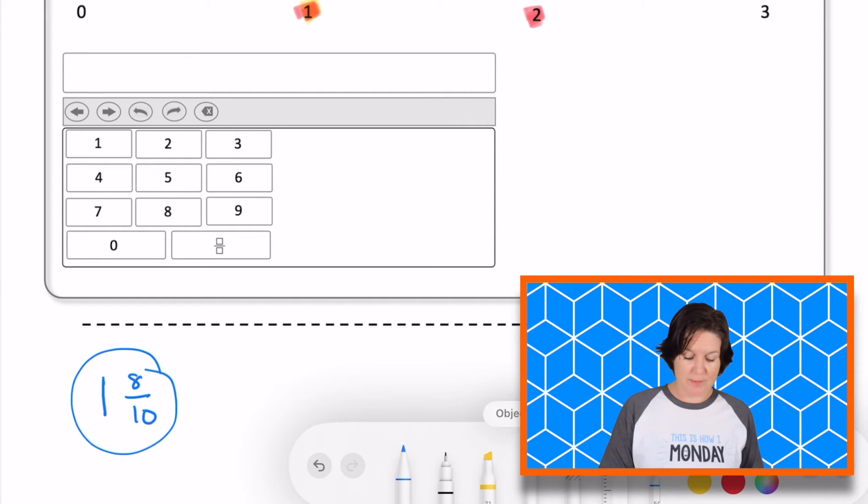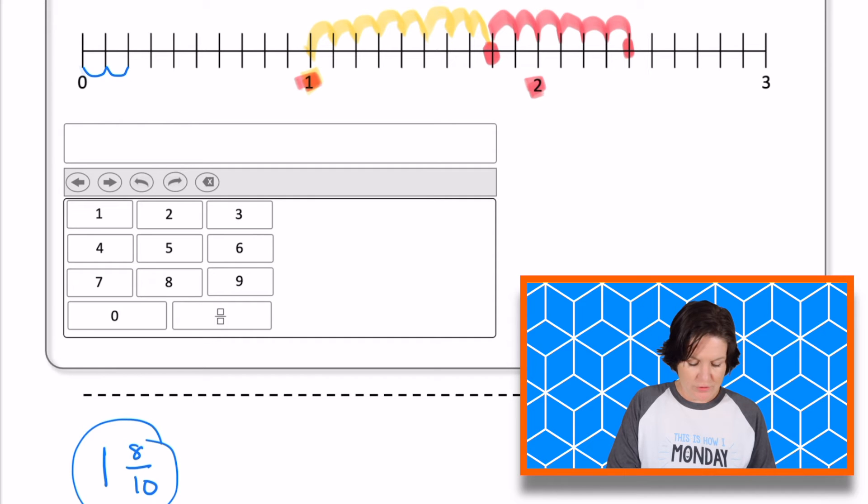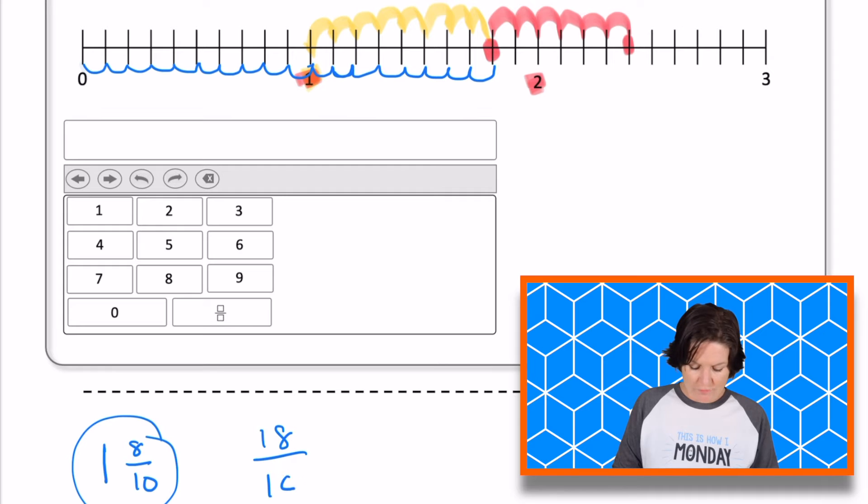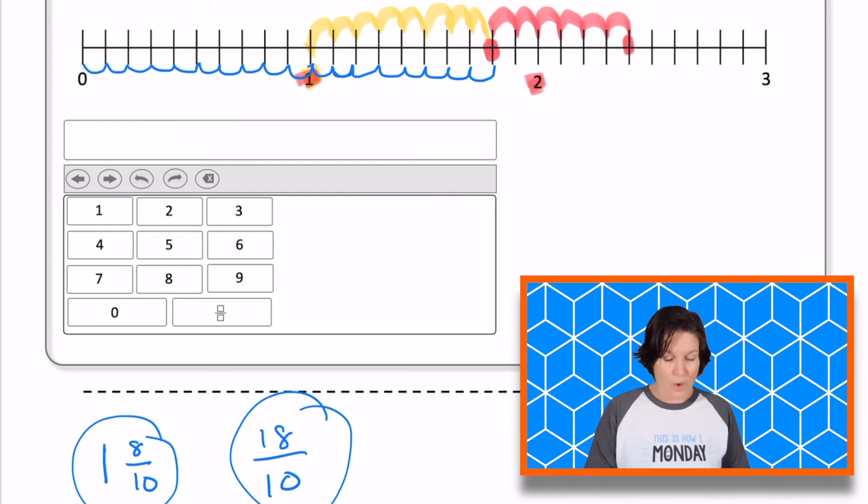Another answer could be starting at the zero. So then we've got one tenth, two tenths, three tenths, four tenths, five tenths, six tenths, seven tenths, eight tenths, nine tenths, ten tenths, which is the same as one whole, eleven tenths, twelve tenths, thirteen tenths, fourteen tenths, fifteen tenths, sixteen tenths, seventeen tenths, eighteen tenths. So we've got two different answers here. We could have one and eight tenths or eighteen tenths. Those are both correct.